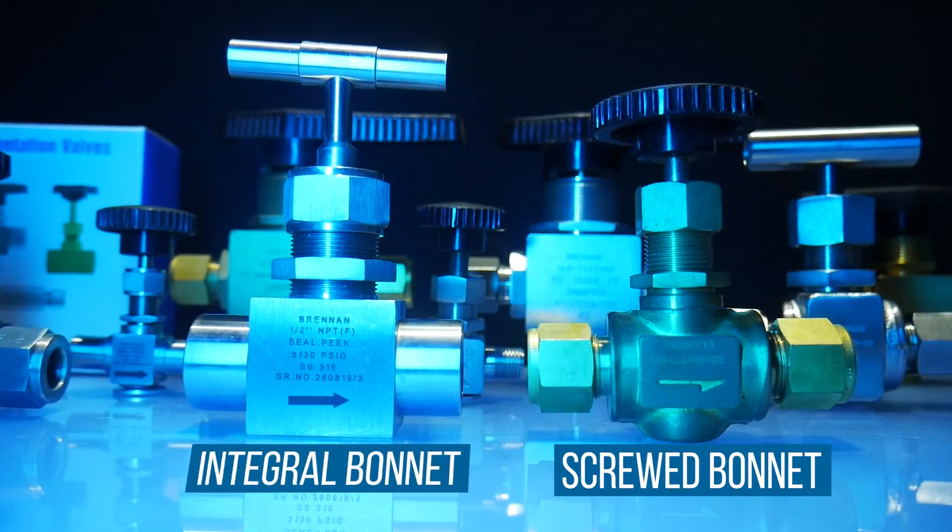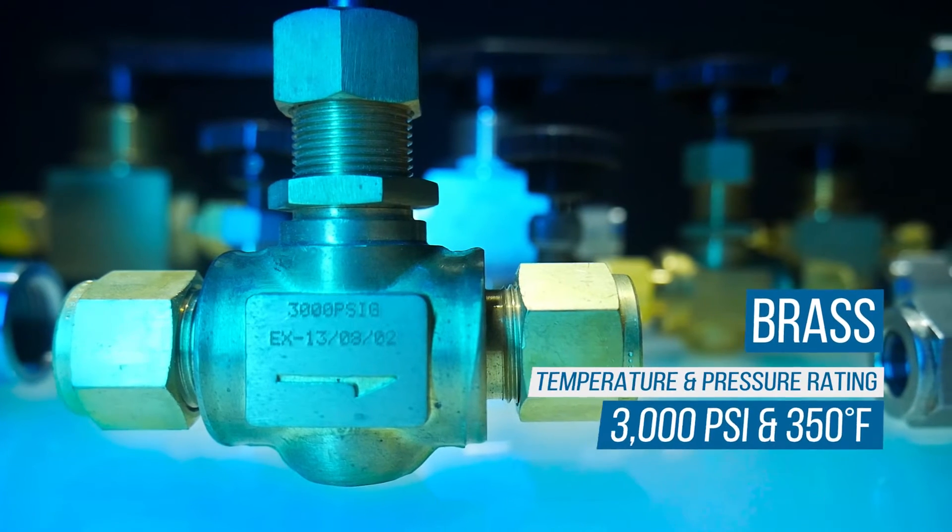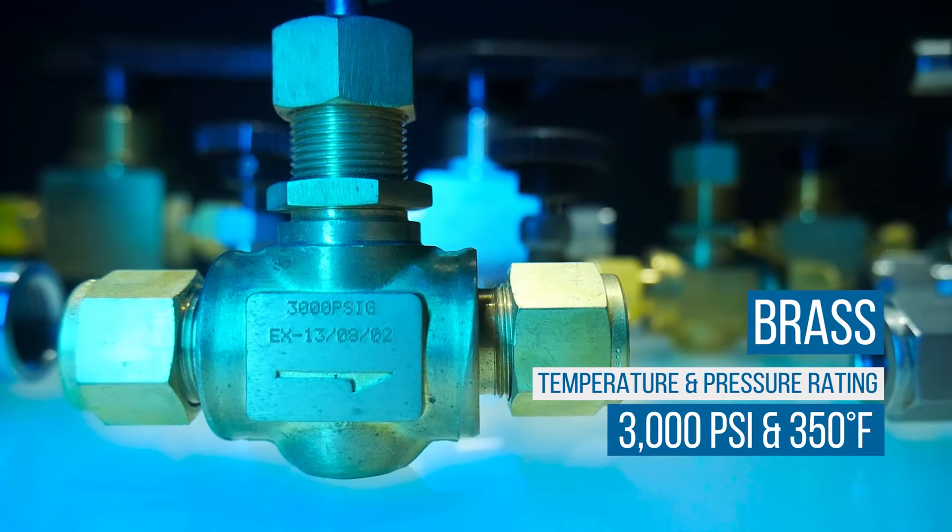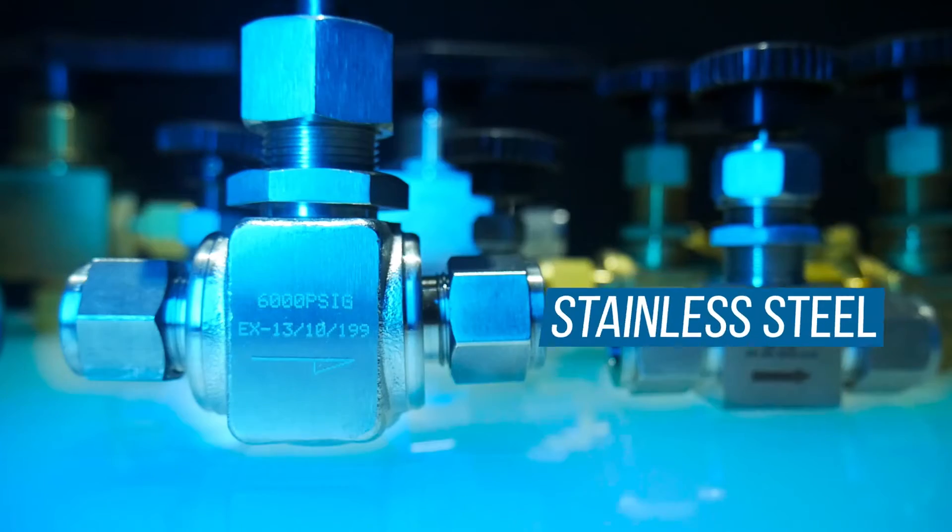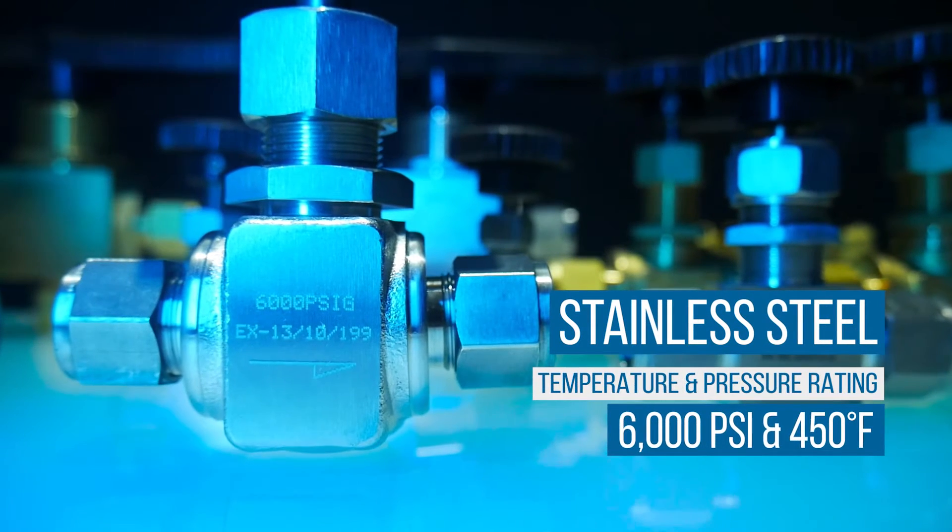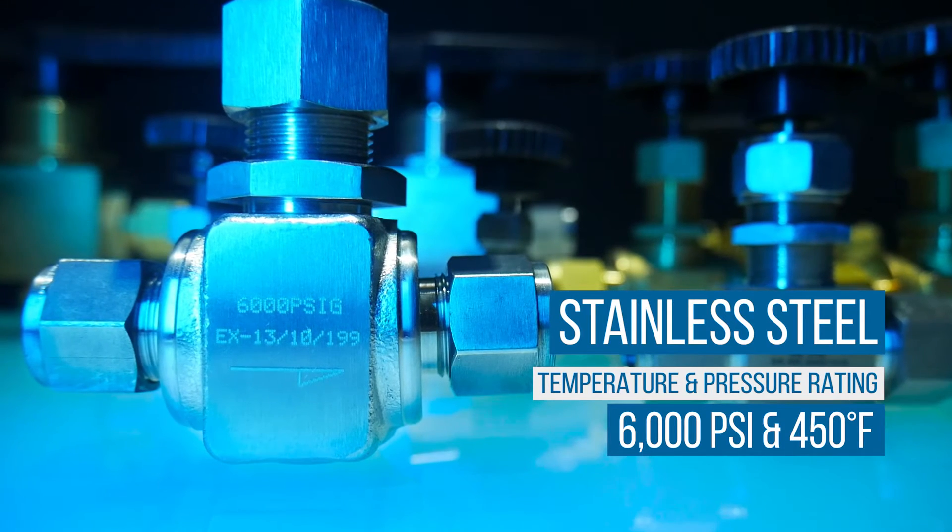Instrumentation needle valves are available with screwed bonnet or integral bonnet. Brass instrumentation needle valves are rated for pressures up to 3,000 psi and temperatures to 350 degrees Fahrenheit, while stainless steel instrumentation needle valves are rated for pressures up to 6,000 psi and 450 degrees Fahrenheit.